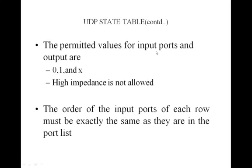The permitted values for input ports and outputs are 0, 1, and x — high impedance is not allowed. The order of the input ports in each row must be exactly the same as they appear in the port list. If the port list has a, b, then the table rows must also follow a then b — not b first and then a.